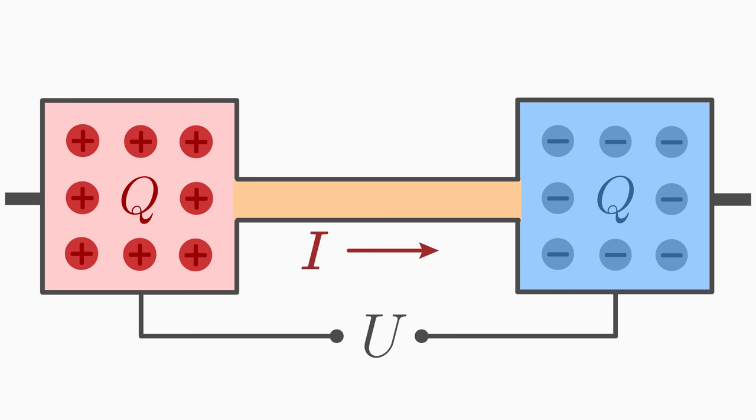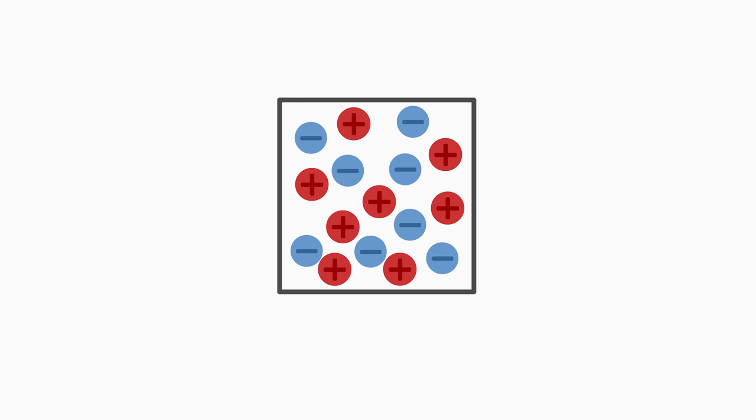The electric current I is the amount of charge per second that travels through this connection. It is clear that the charges only travel through this connection if there is any charge separation at all. Without charge separation there is neither a voltage nor a current here.